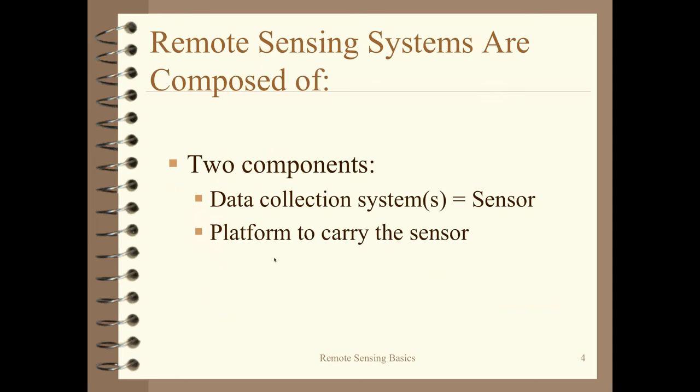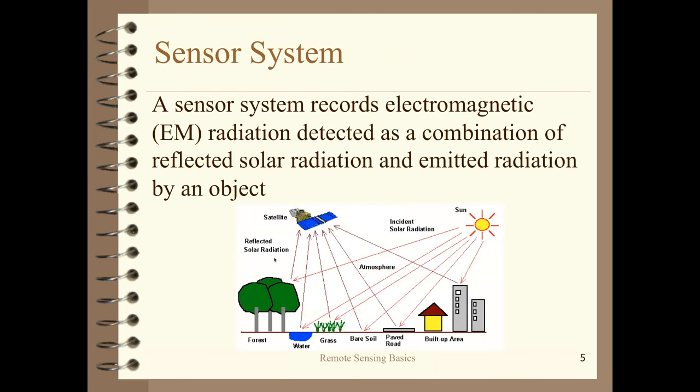Remote sensing systems basically have two components: the sensor itself — the thing that allows us to see — and something to carry that sensor, whether in hand, on an airplane, or whatever. The way this works is we're talking about electromagnetic energy. You have a source, and in most cases that's the sun. That energy comes through the atmosphere, hits particular objects, and is either absorbed, reflected, or transmitted. Typically we care most about what's reflected, passing back through the atmosphere up to the sensor.